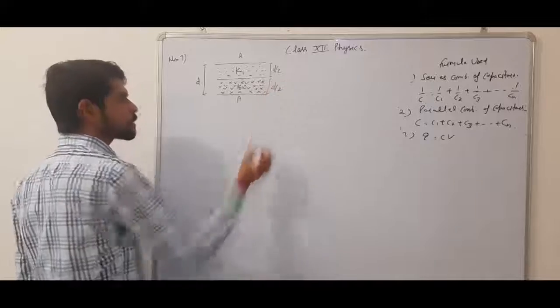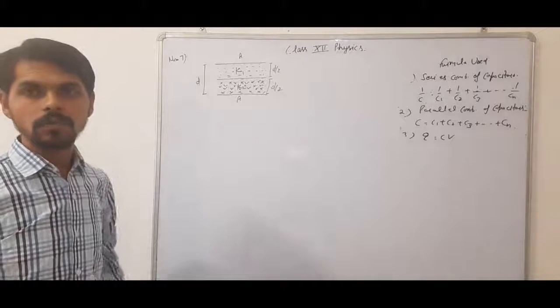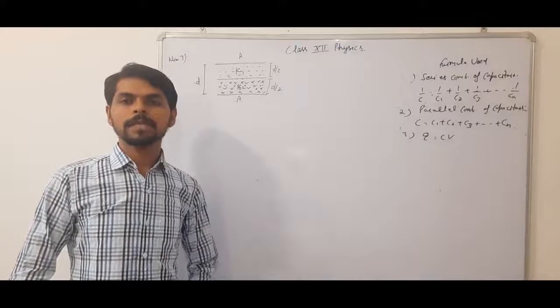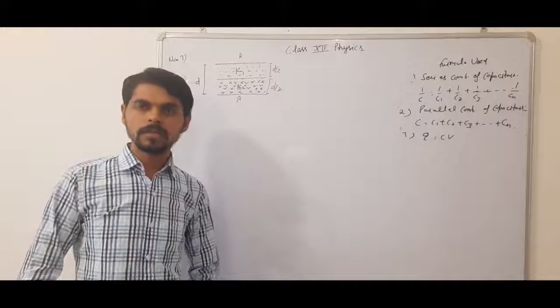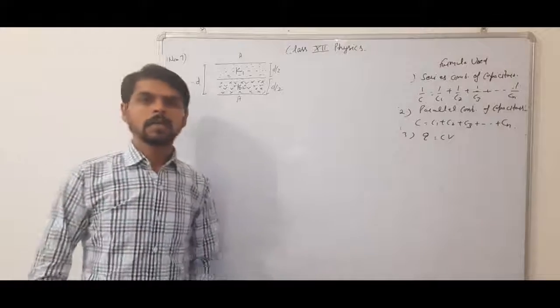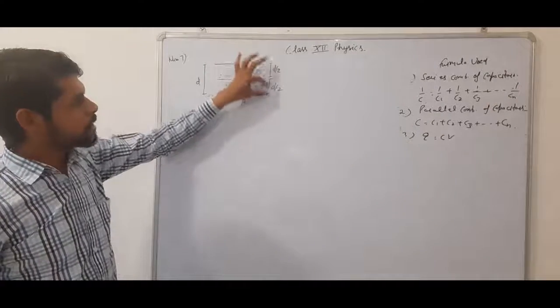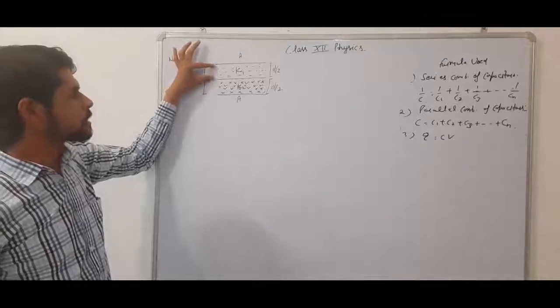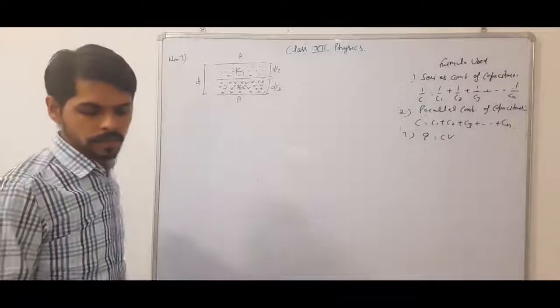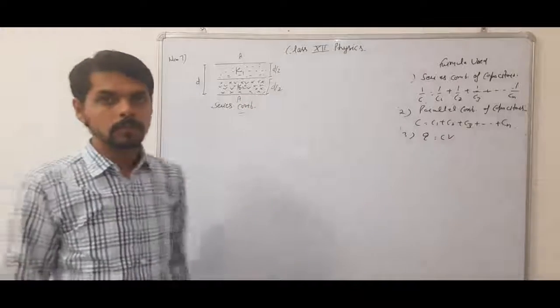So if we have to calculate the total capacitance of the capacitor now. If the two dielectric mediums are inserted between the plates of the capacitor and they are filled separating the distance into two equal halves, half distance D by 2, they are in series combination.